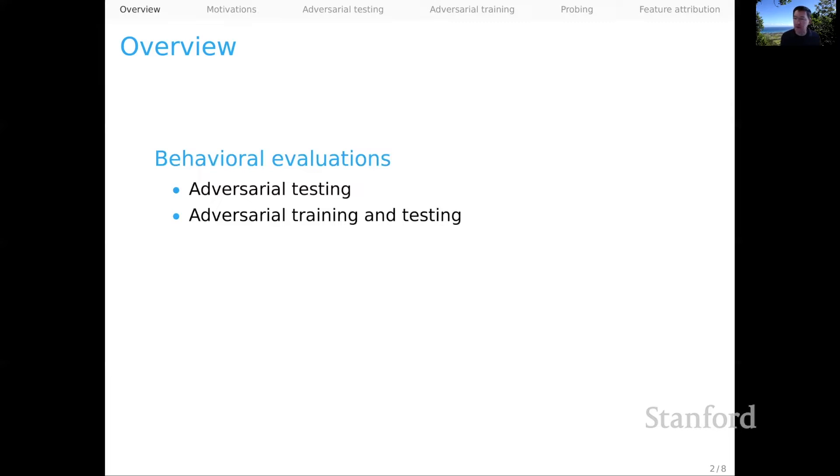The first two fall under the heading of behavioral evaluations. We'll talk about adversarial testing, which is a very flexible way for you to expose that your system might have some weaknesses or fail to capture some linguistic phenomenon in a very systematic way. And then at this point, we also have the opportunity for a number of tasks to do adversarial training and testing.